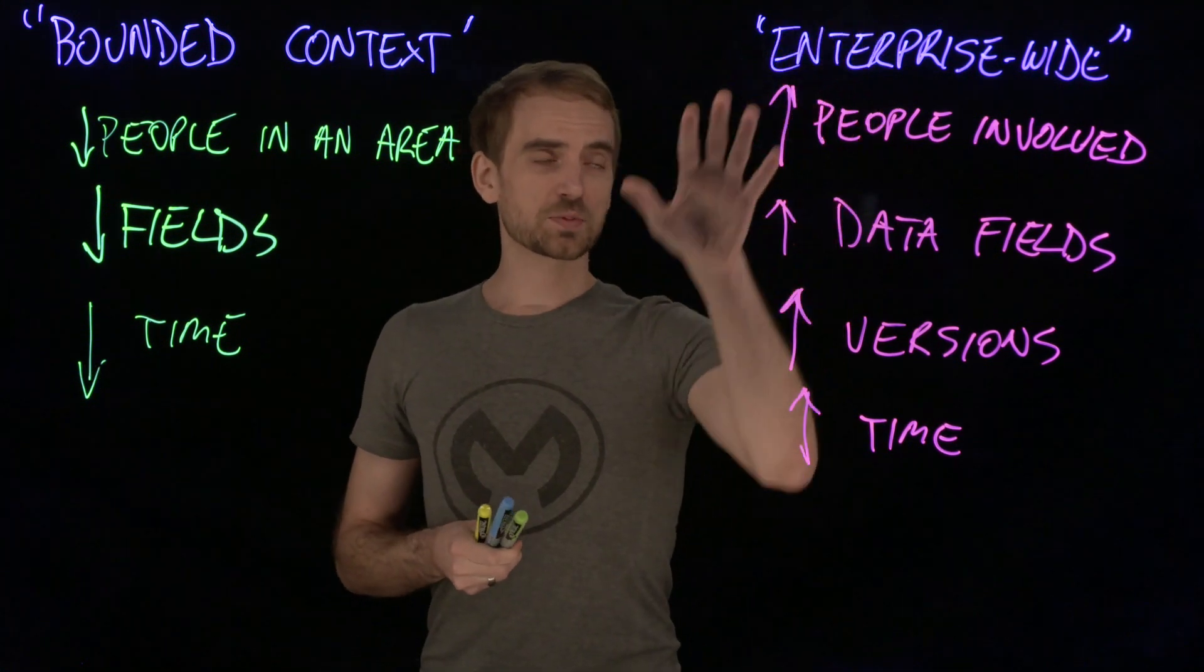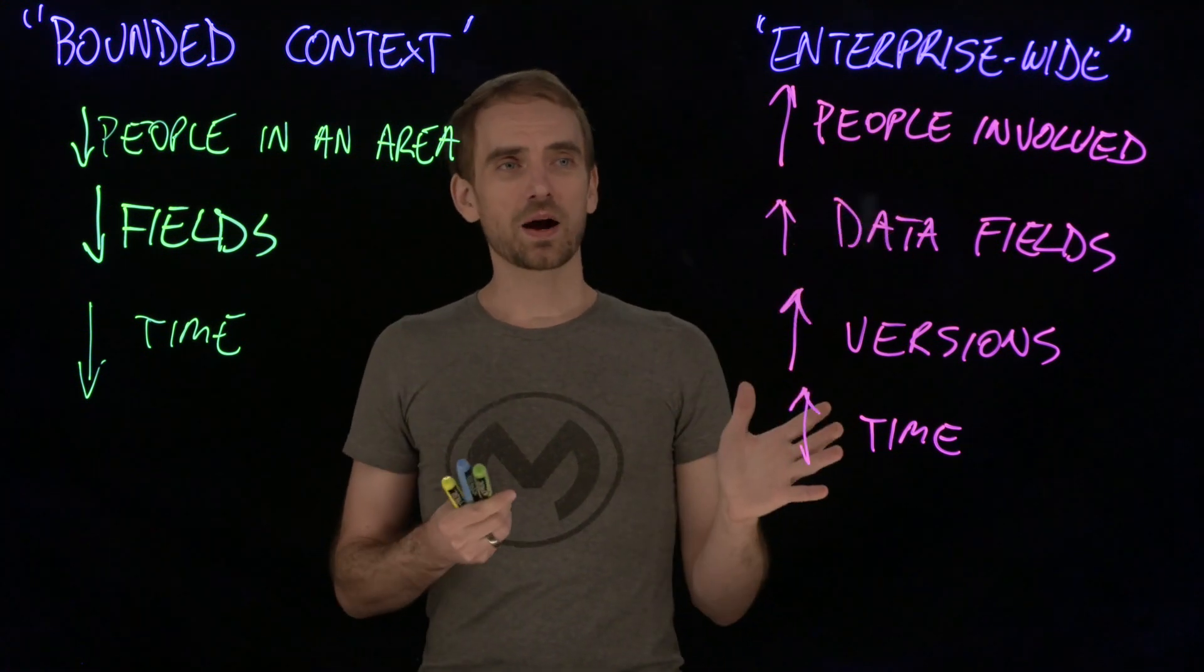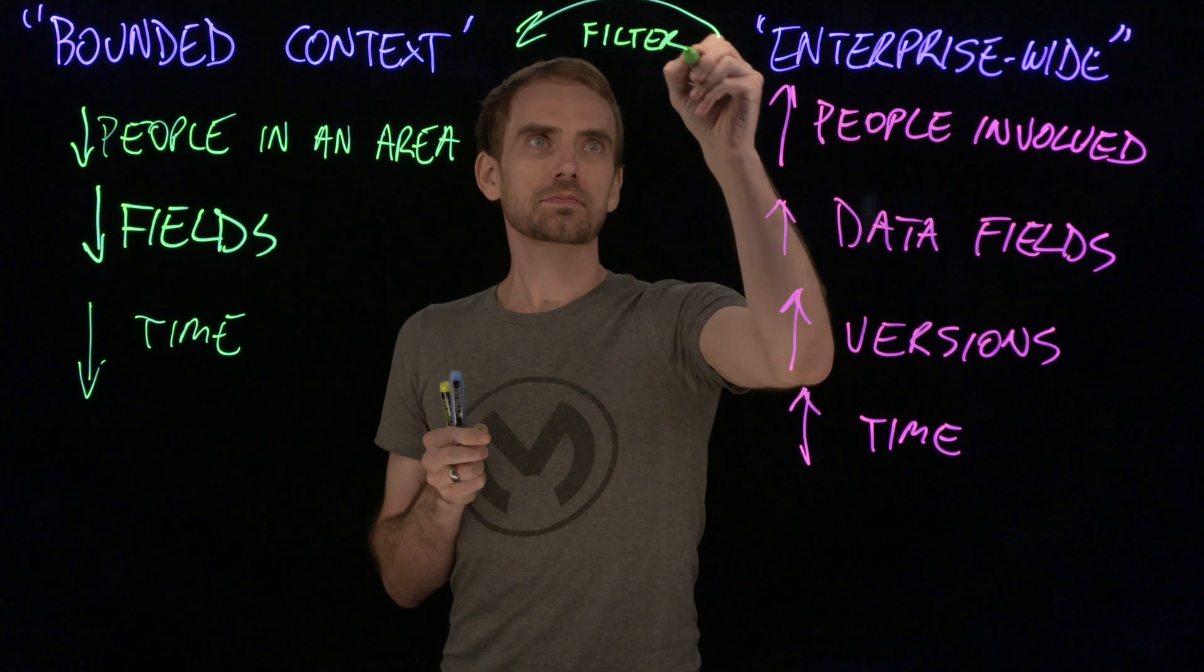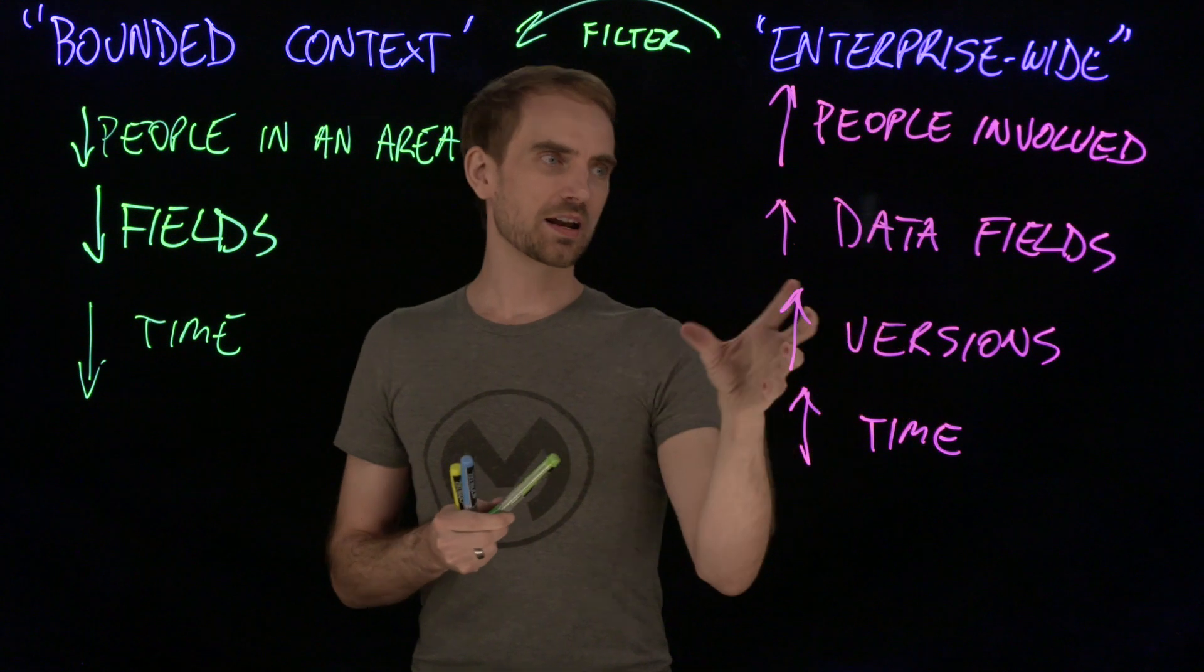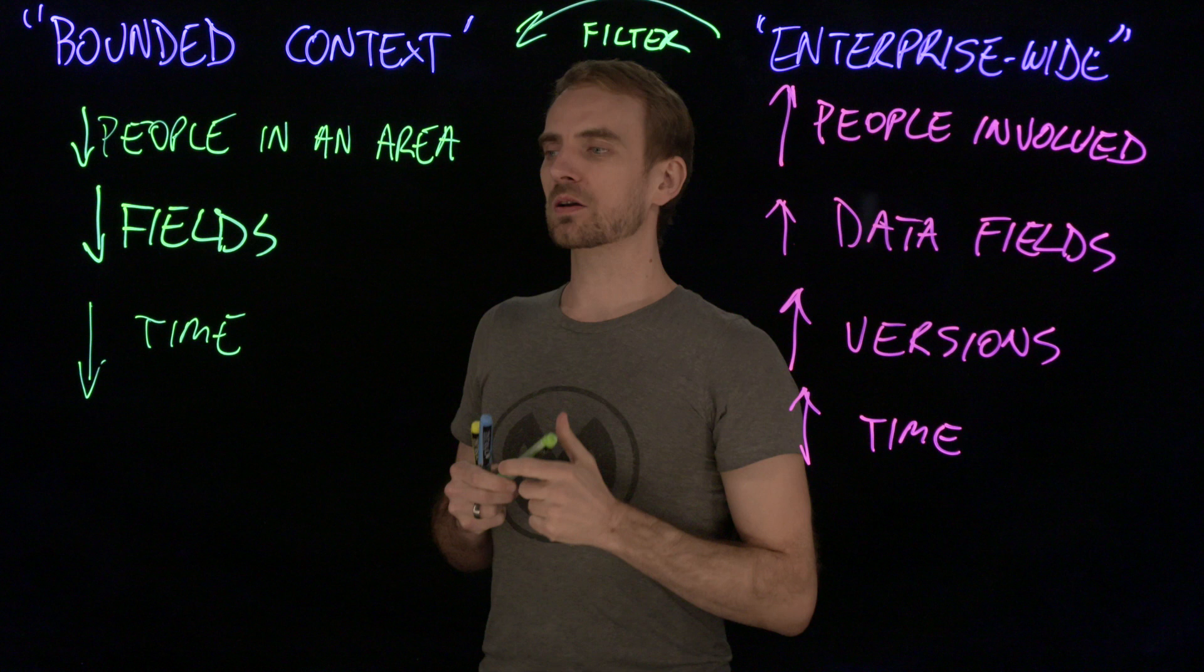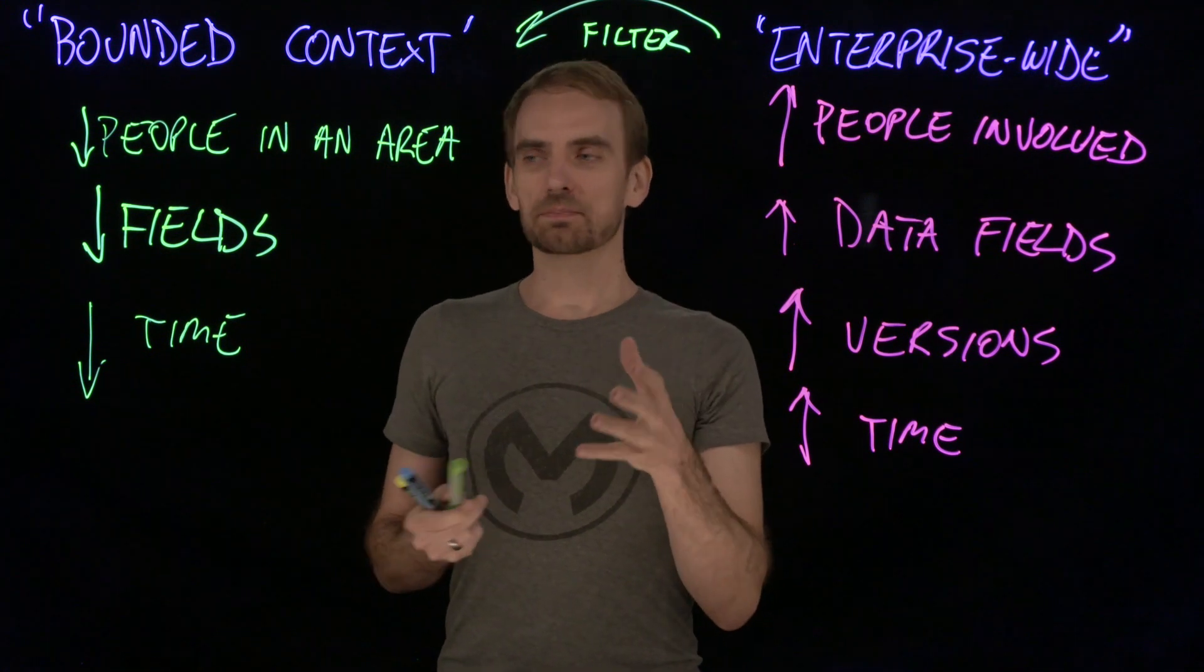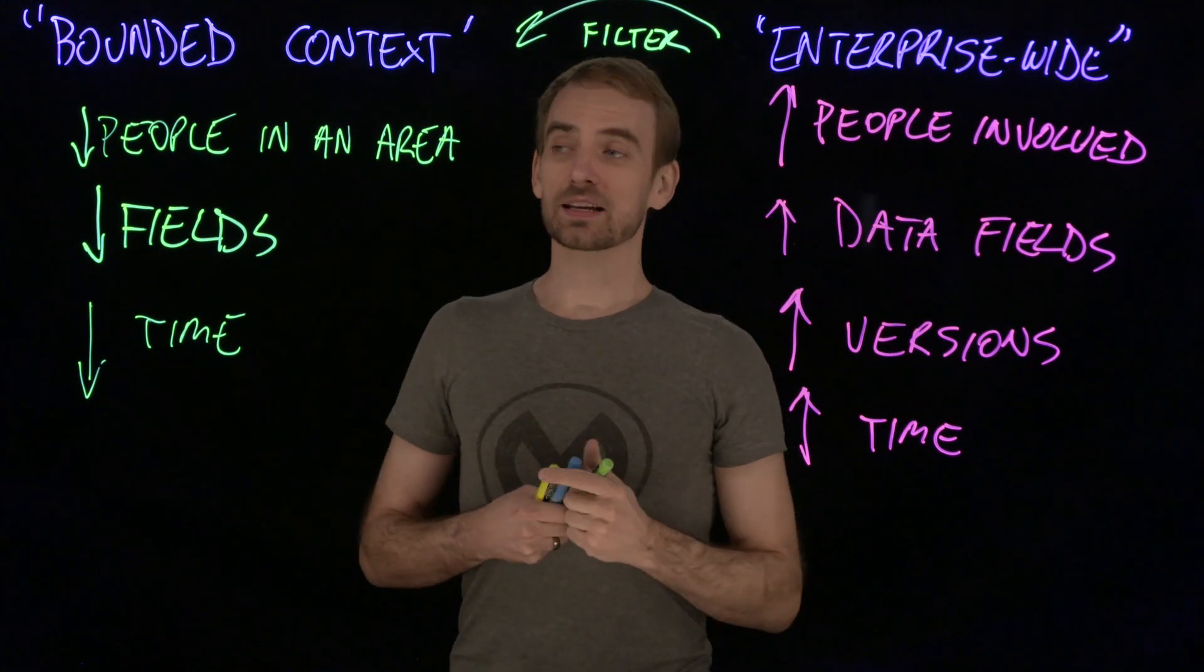Now if you've already spent the time on an enterprise-wide canonical data modeling exercise, don't throw that away. You can essentially make use of this through a bit of a filtering process. So get what you need, don't bring across everything, don't try and lump in all of the data fields. So move it to something a little bit narrower focus. And that could then mean that you don't waste effort starting again, and you could sanitize it a little bit, just move it into something more appropriate to the given domain that you're modeling at that point.